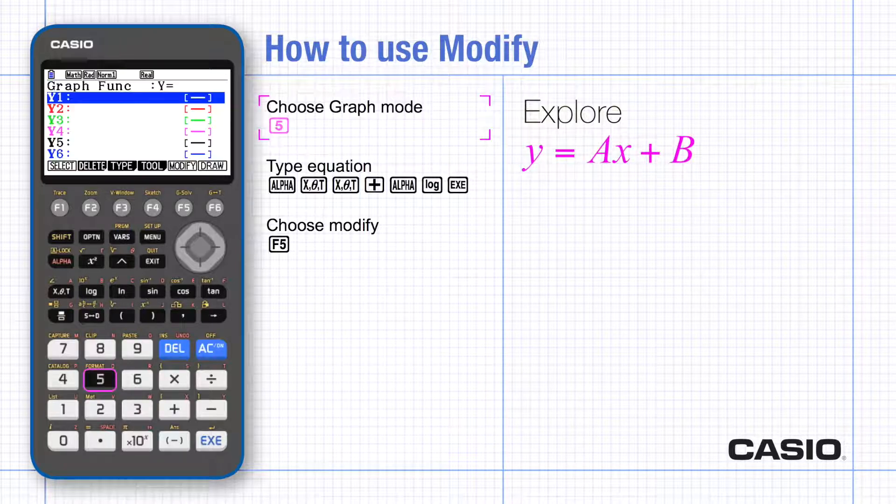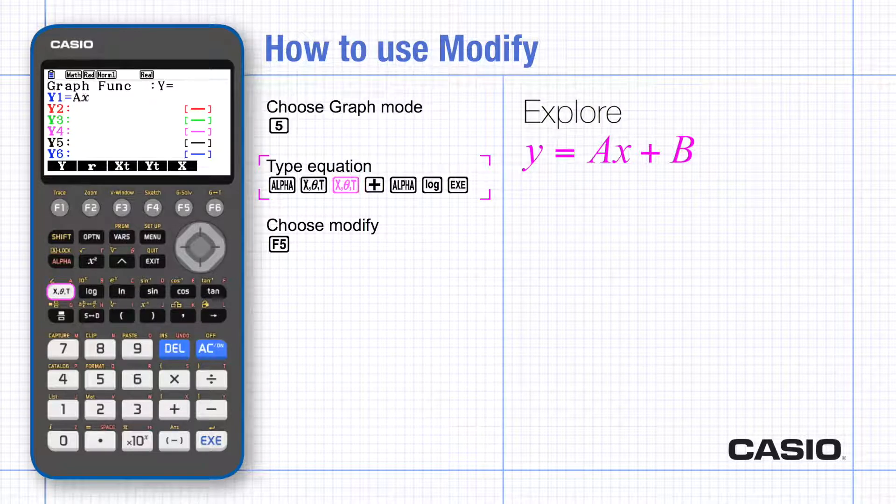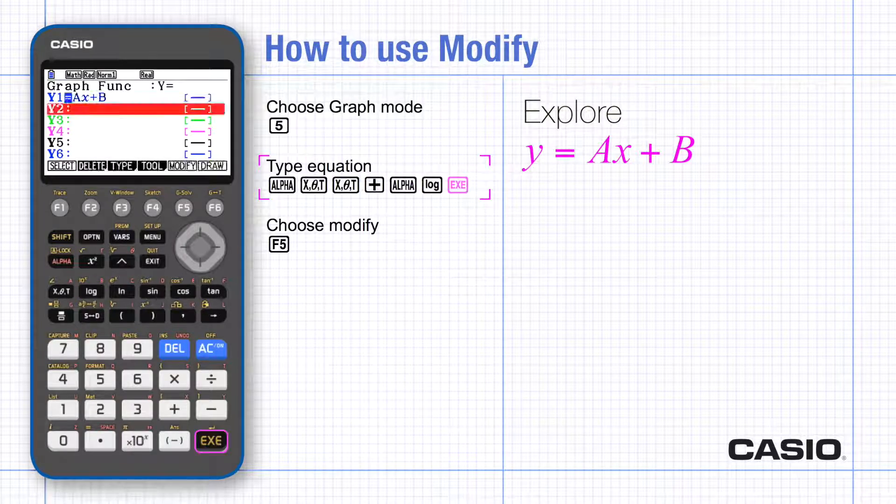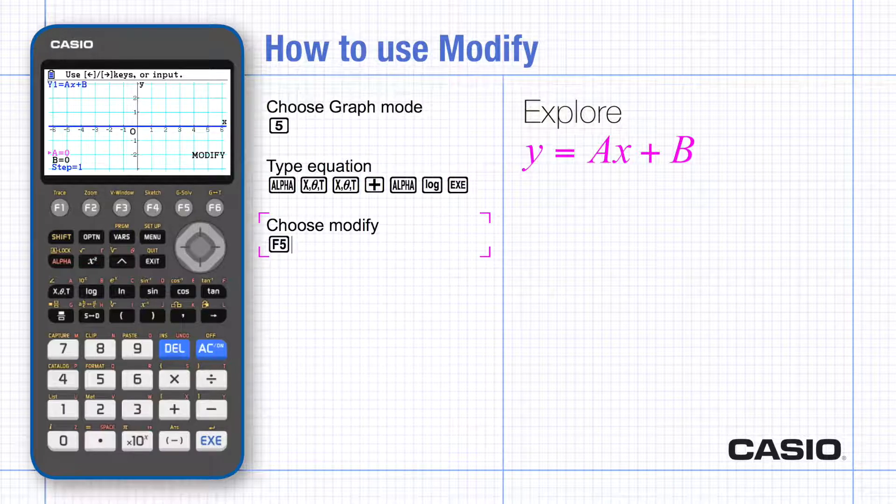Choose graph mode and use the alpha key and the x theta t key to type in the equation with the constants, and then press execute to enter, and then press modify instead of draw.